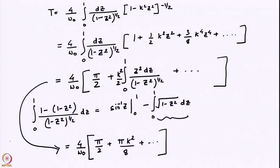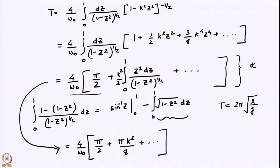The time period of the pendulum is a function of k. It is only at a linear approximation that we retain only the first term in the infinite series, and then there is no k in the resultant expression. Consequently, in the linear limit we recover the familiar result T = 2π√(l/g). One has to understand that this is an approximation — it is the first term in an expansion. If theta_0 is much much less than 1 (in radians), then you can do a Taylor series expansion of sin and recover this result.